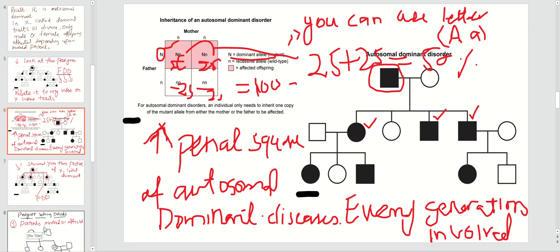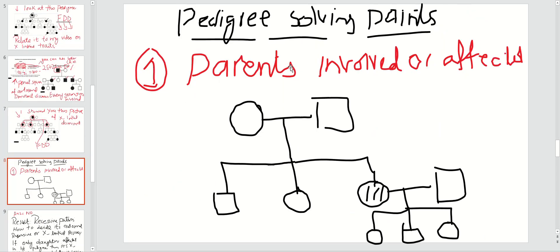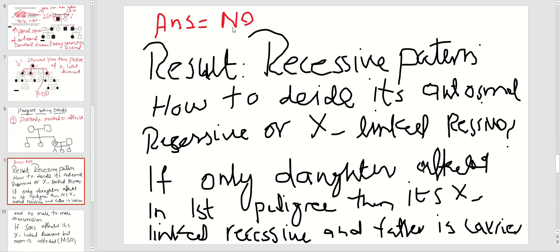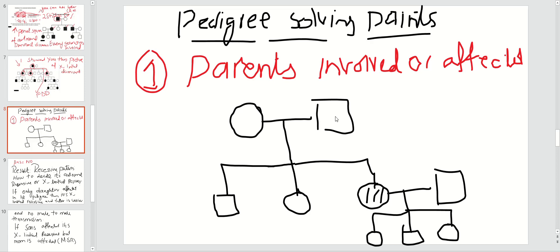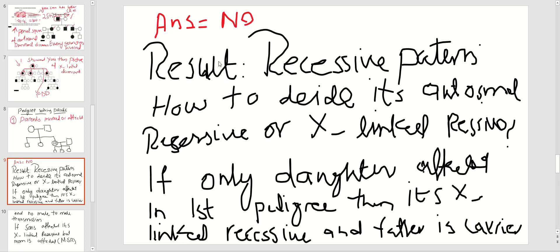Now we go to the pedigree solving points related to recessive inheritance. Again you ask: are the parents involved or affected? No. If parents are not involved, then you might be dealing with a recessive disorder. In this case, you see the mother and father are not affected, so I will say no — parents are not affected — and the result will be it is a recessive pattern.